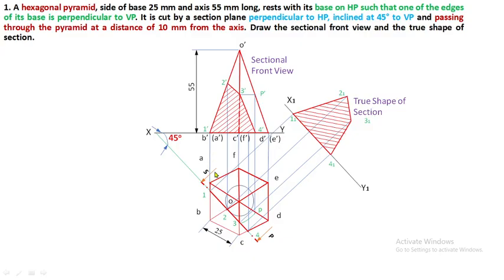The key new concept in this problem: whenever they say a distance of 10 mm from the axis, draw a circle with that distance as radius keeping O as center, and make sure that the 45 degree inclination line is tangent to this circle — that is the condition of the section plane. If you have any doubts, ask through the comment box. We previously discussed square prism and square pyramid; check the description box for those videos. We will solve more problems in section of solids — subscribe for further videos. Thank you.